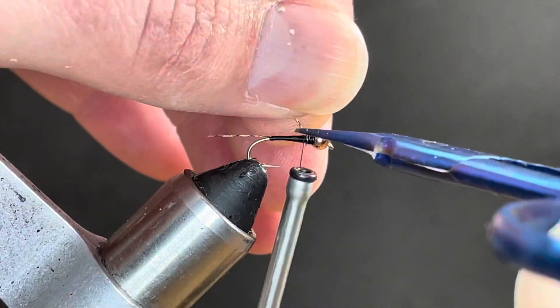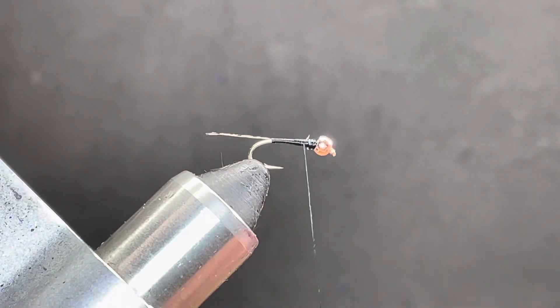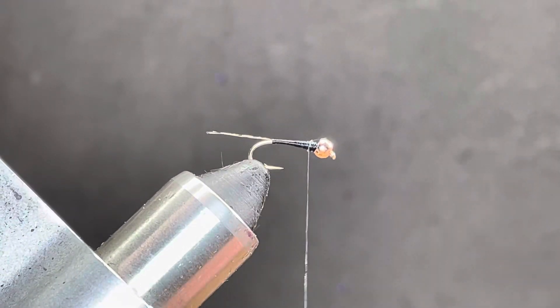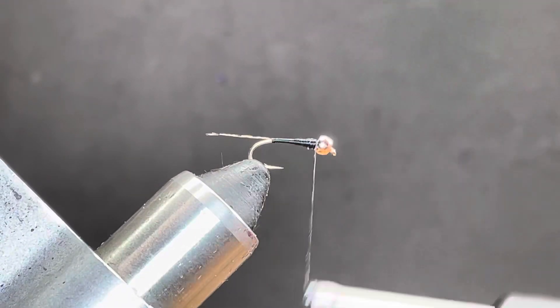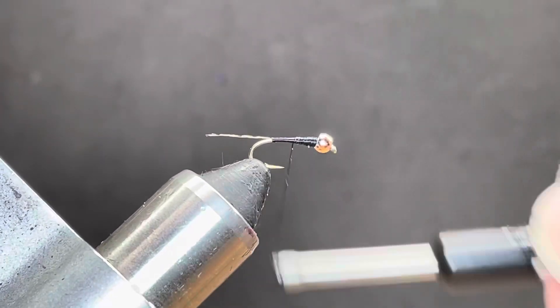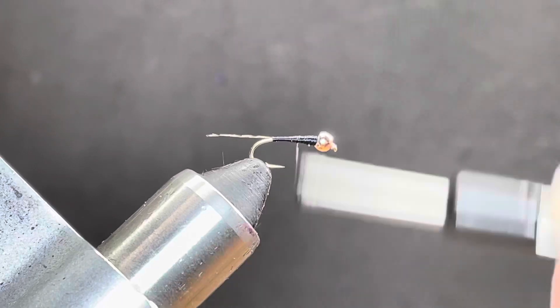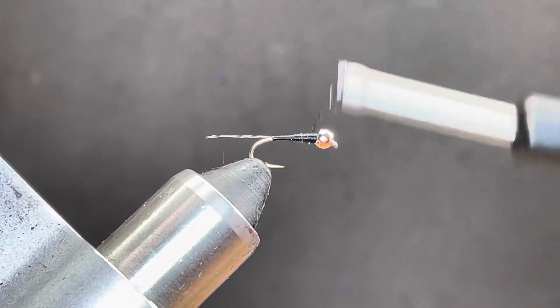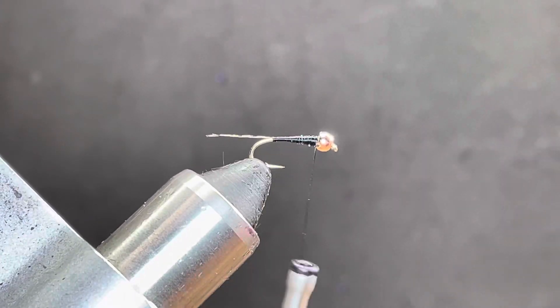One thing that's cool about these Pertagons is they're so easy to tie, and there's so many variations you can do. Come down about halfway. Back up just to help build the cone.